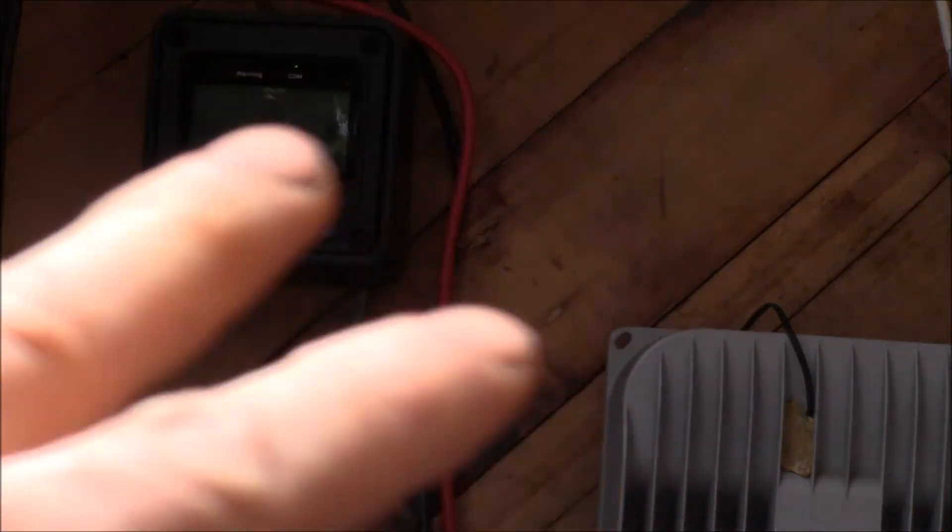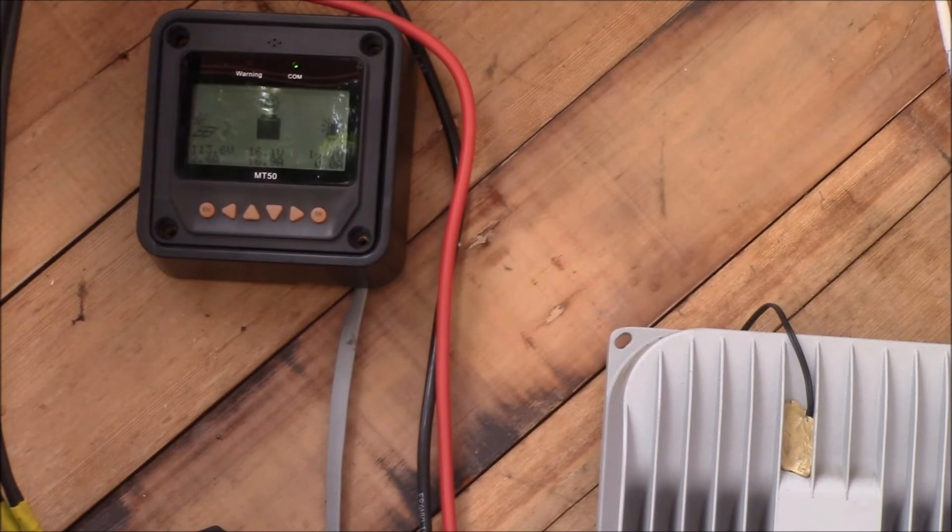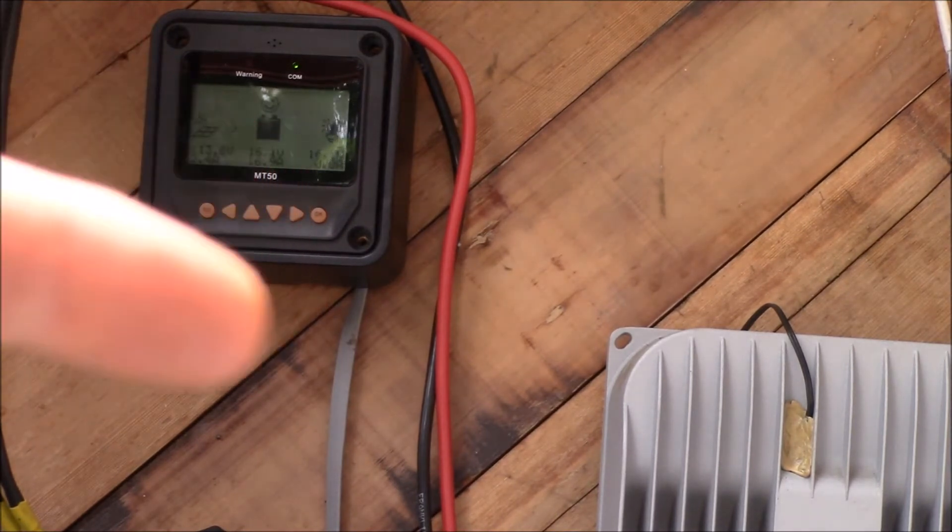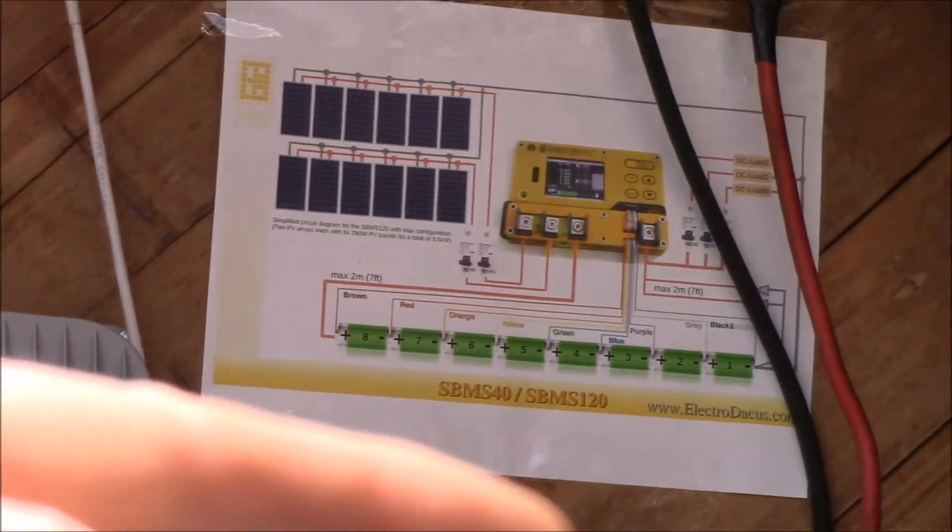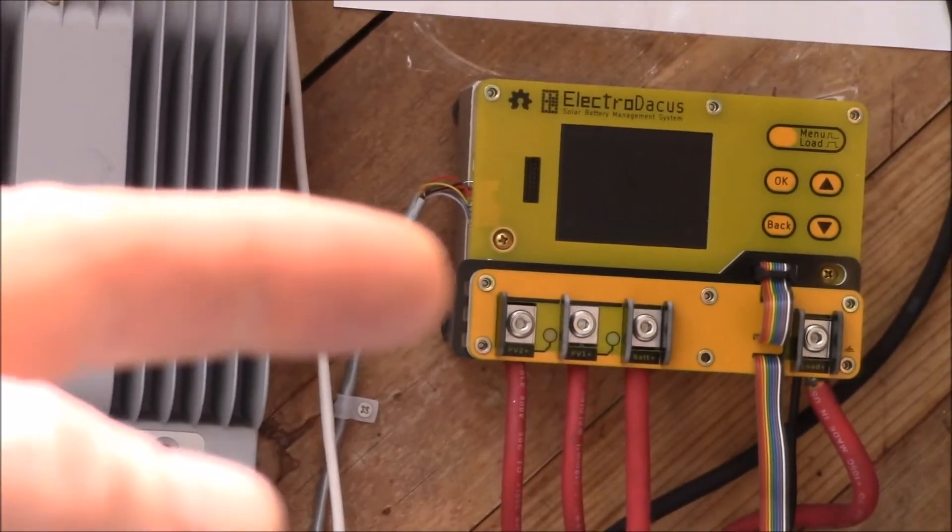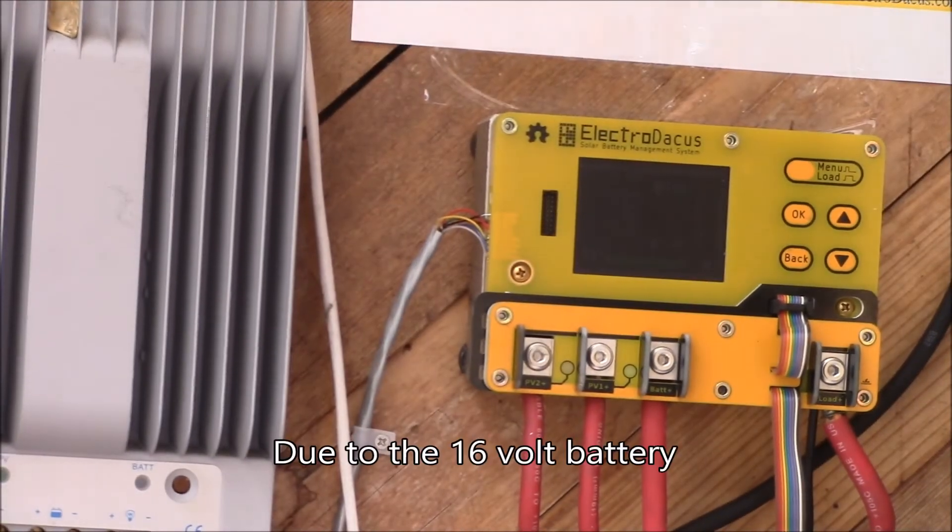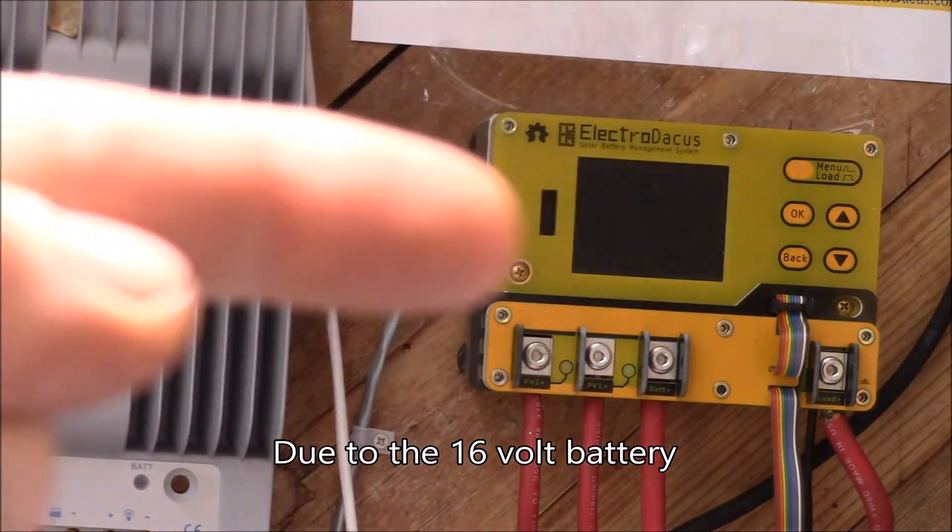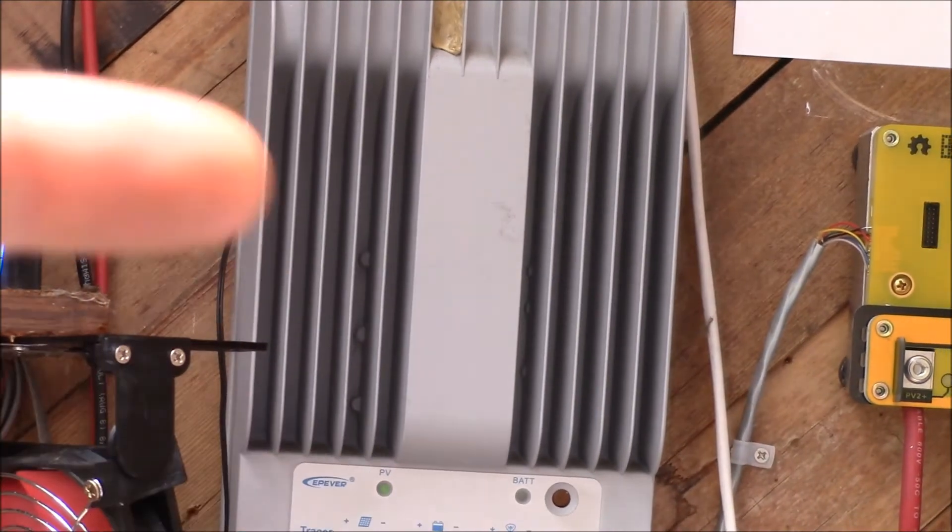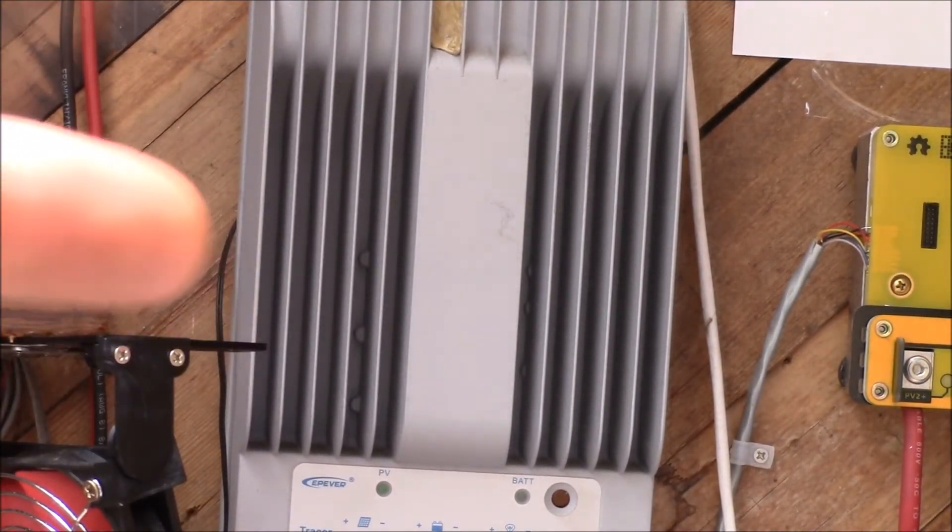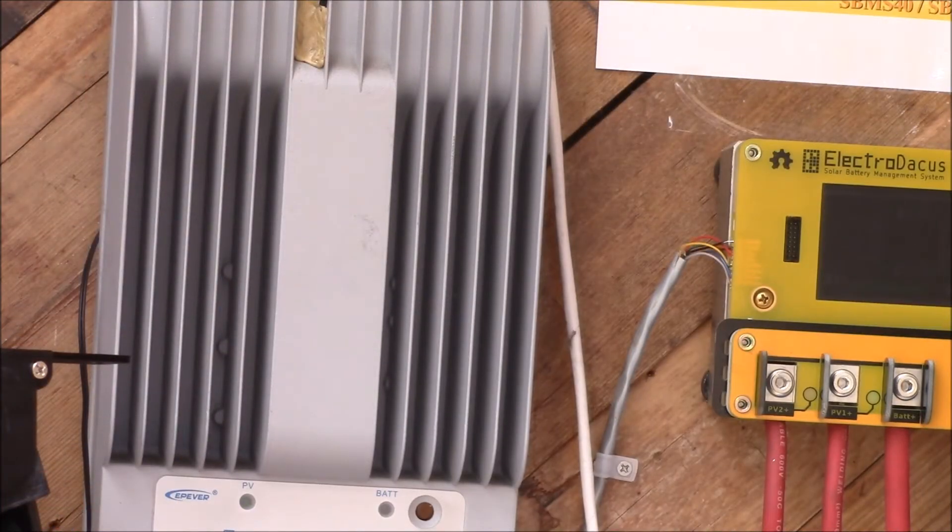The next thing I want to do is step this one down to just two panels in series, that's the only combination I haven't tested yet. Then I'll take the third panel off of this one and put it over on the SBMS 120. There I lose 50% of the output but right now I'm losing 100% of one panel.